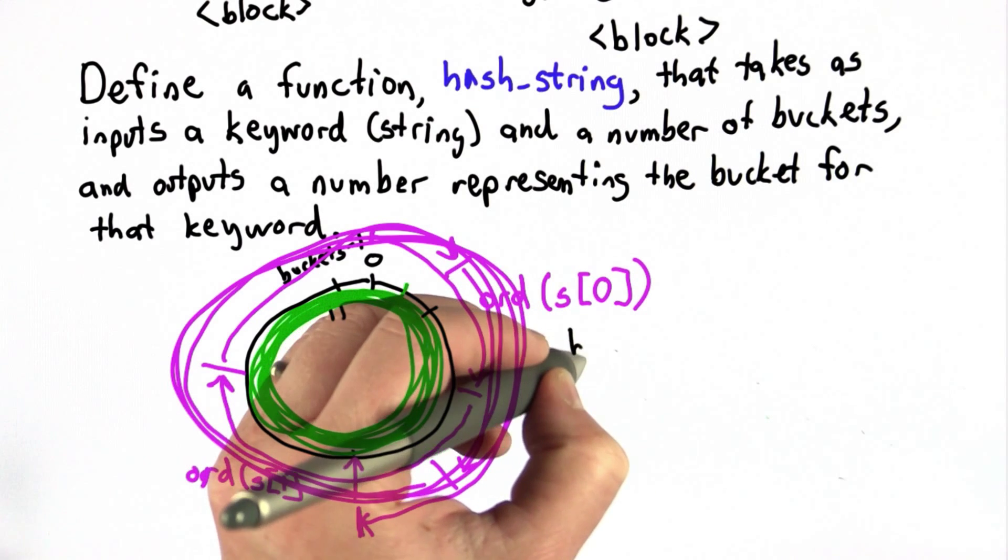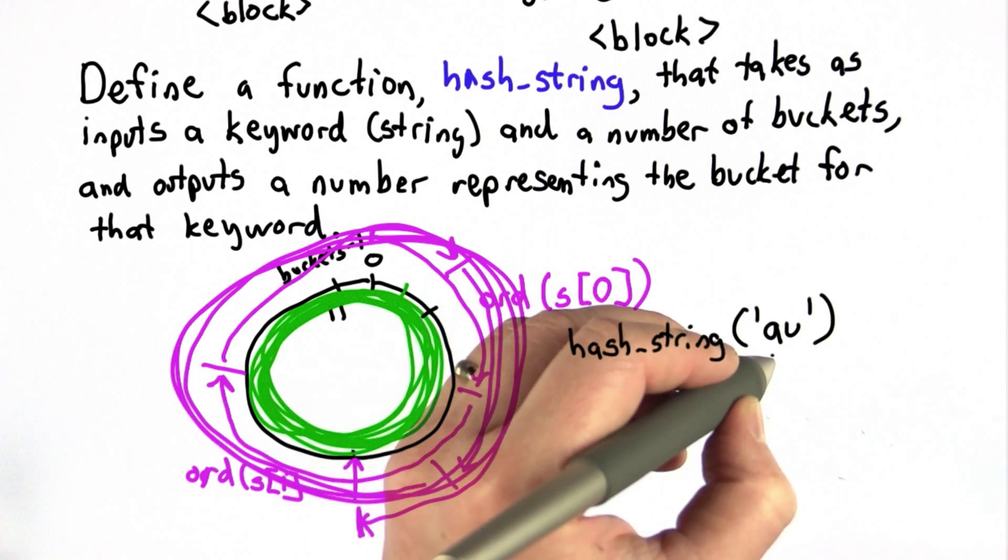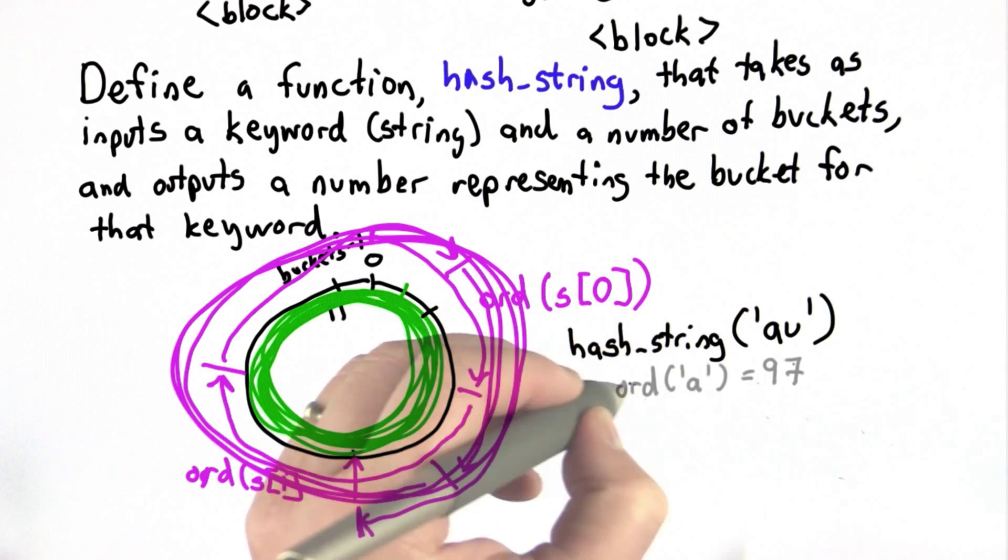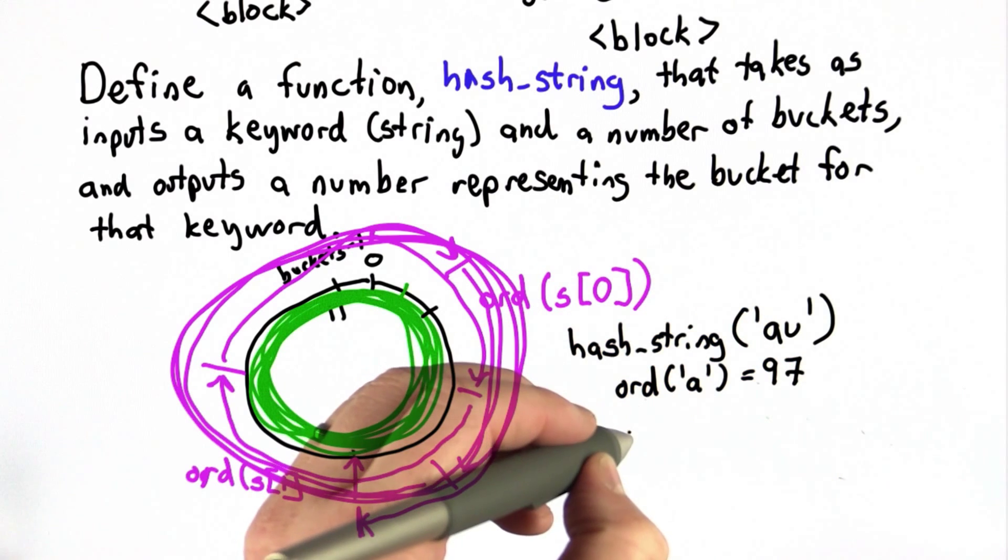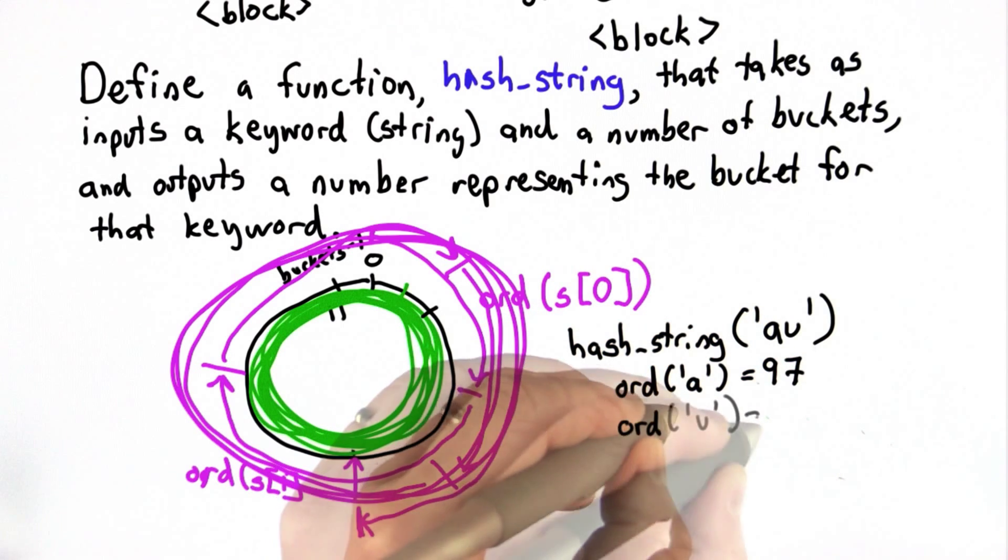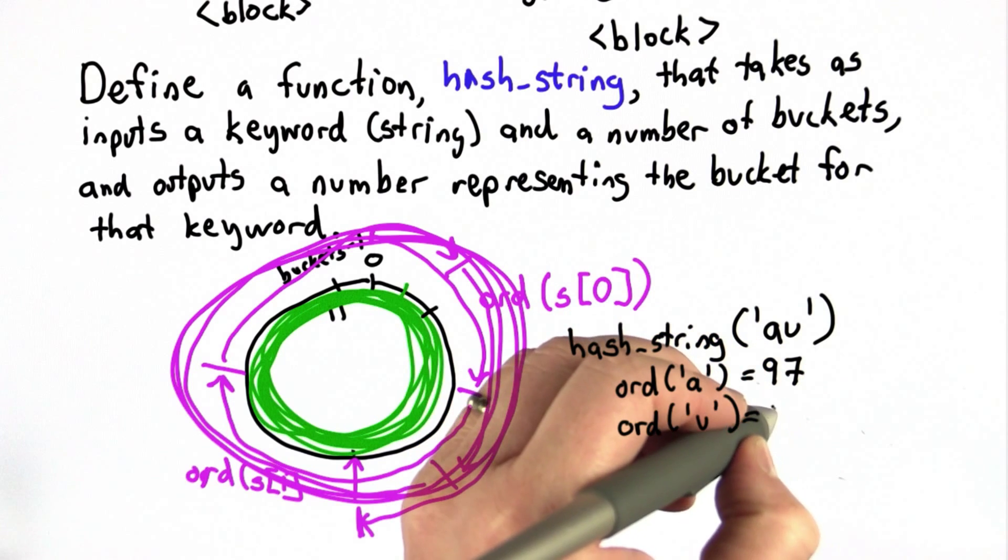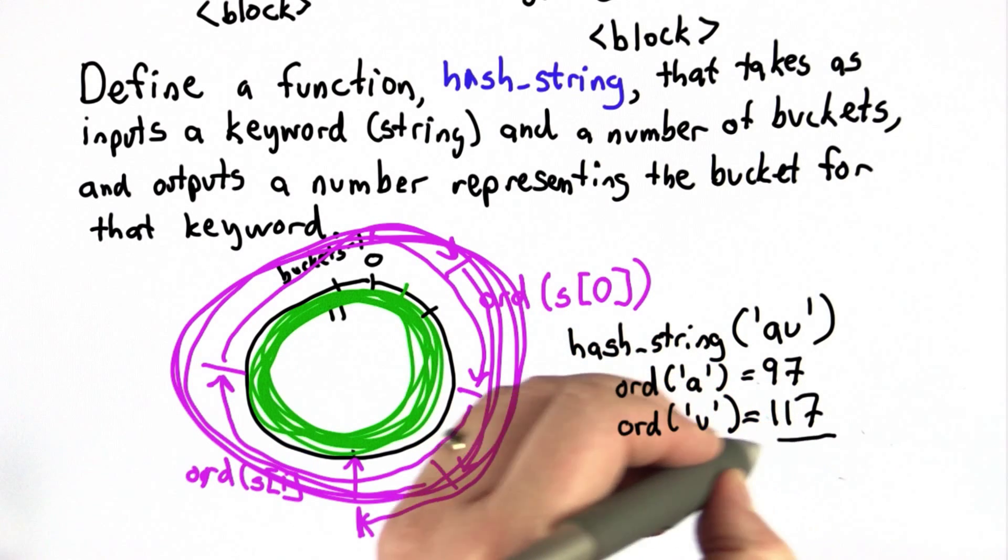Suppose we tried the string AU. The ord of A was 97, and that when we went around the circle ended up at location 1. The ord of U, I can tell you, is 117.